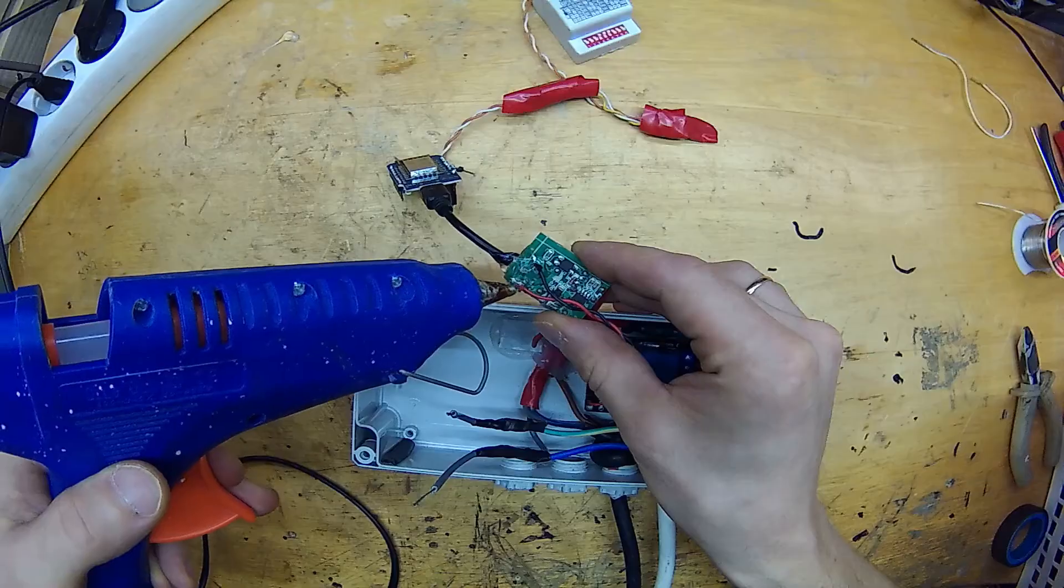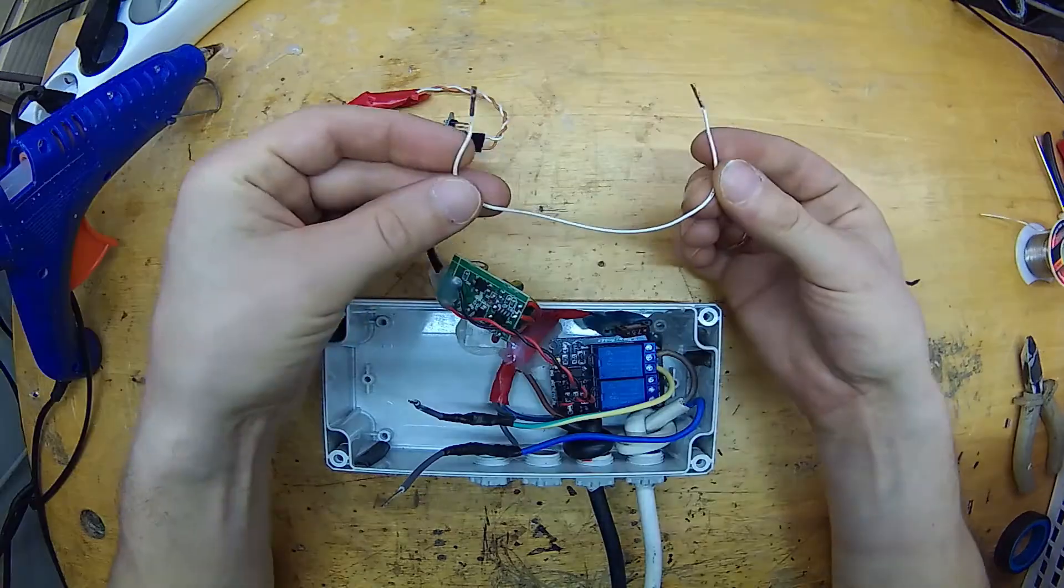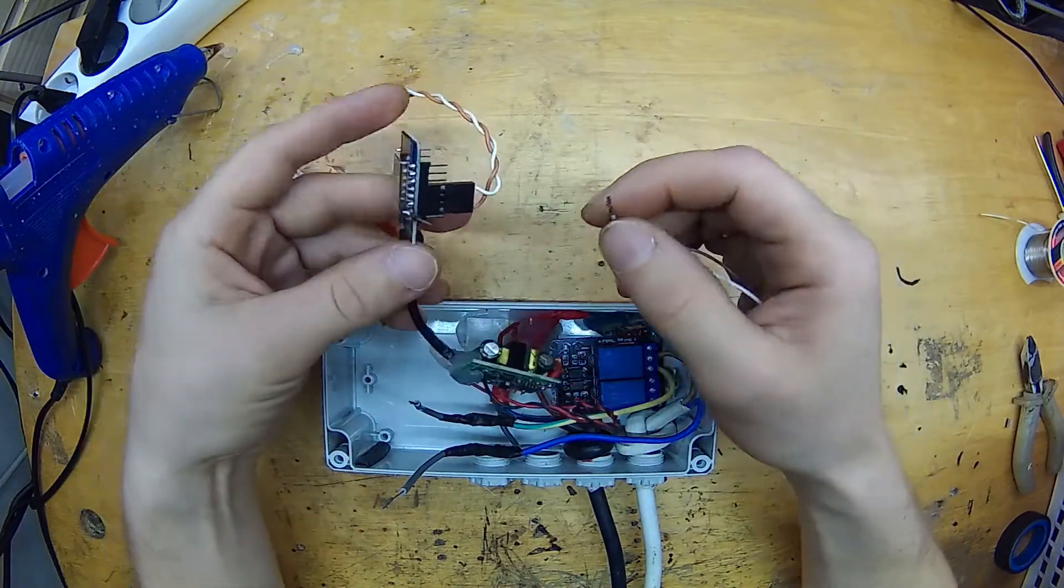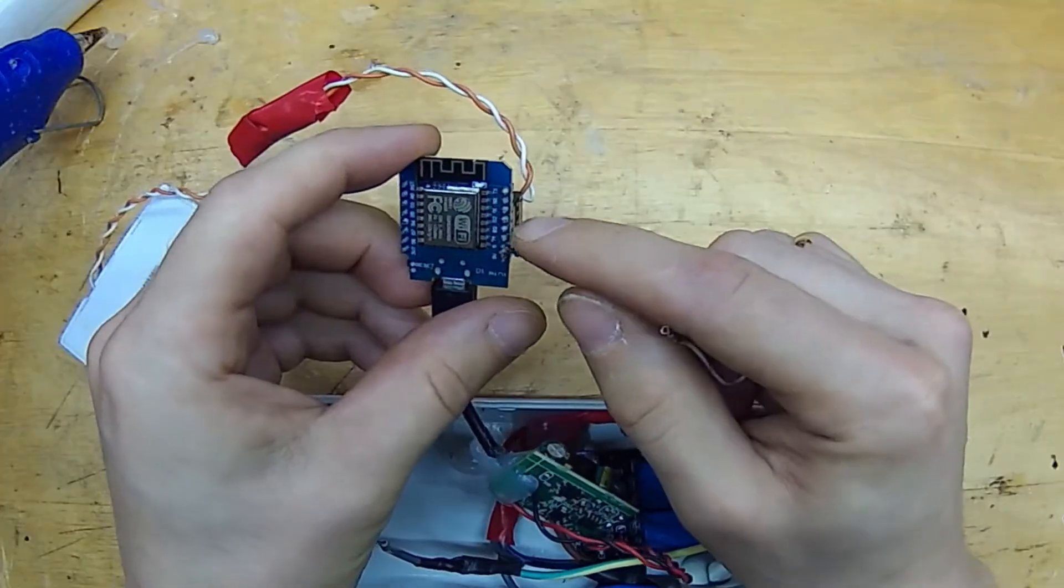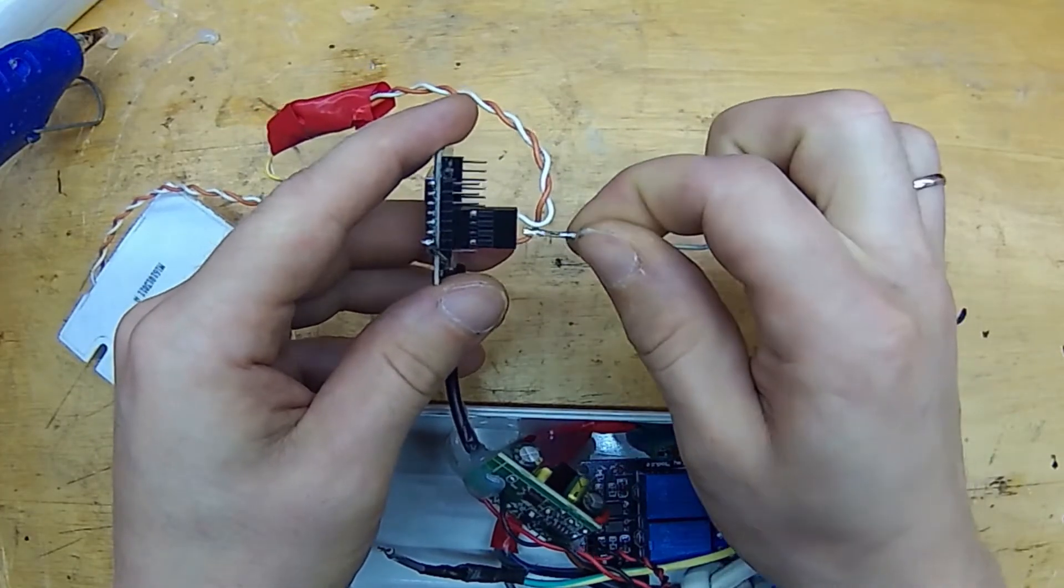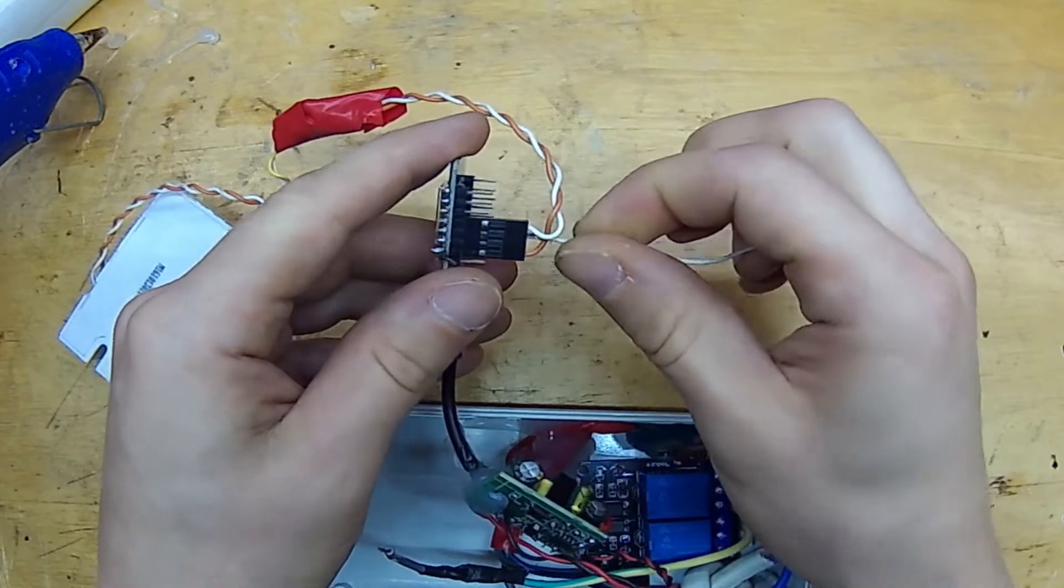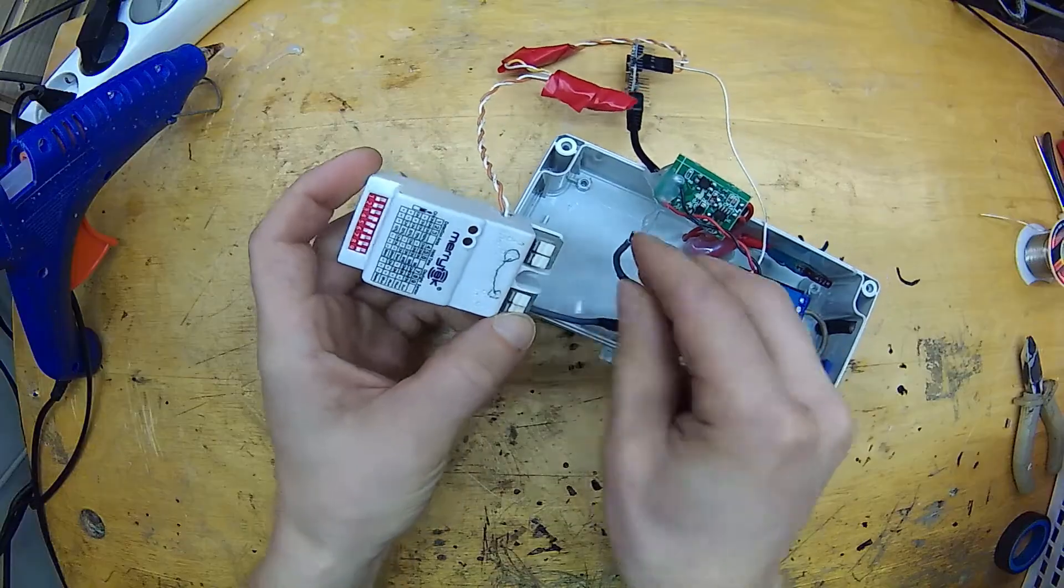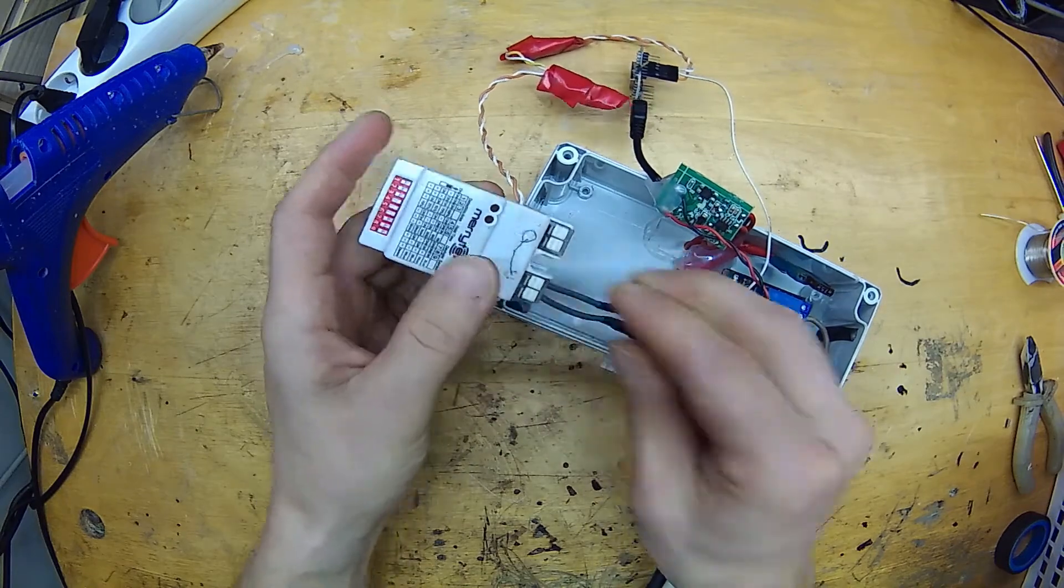Next it's time to connect the signal wire. I'm using the D3 pin on the Wemos board since it's a suitable GPIO pin for using as an output. And now I'm just putting all of this nicely inside this box.